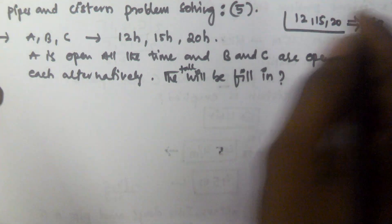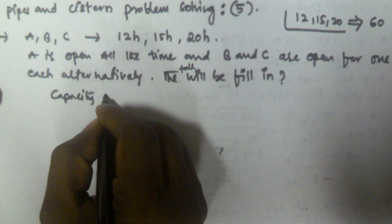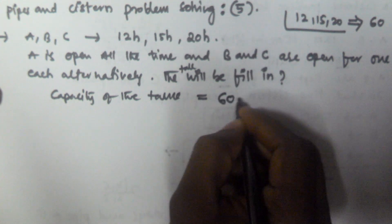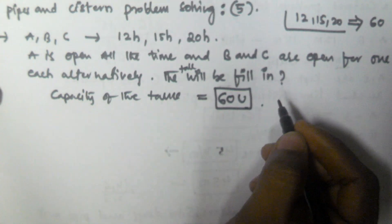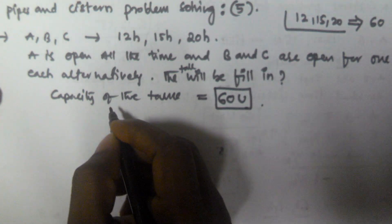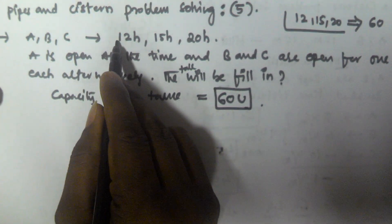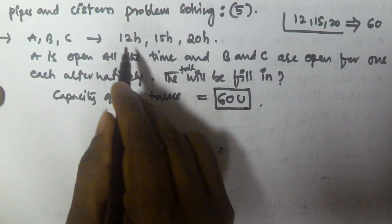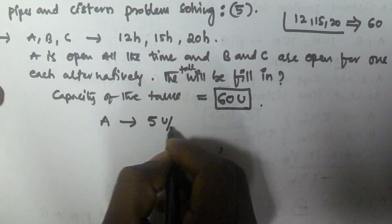So the capacity of the tank is equal to 60 units. That means A is filling in 12 hours. If the total capacity is 60 units and it fills in 12 hours, that means A is filling at 5 units per hour.